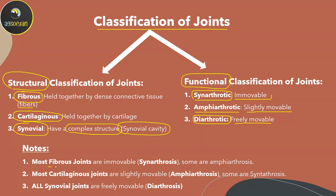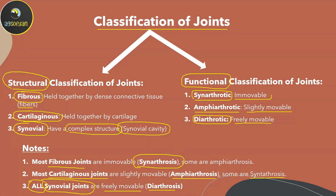Most fibrous joints are synarthrosis — immovable joints. Most cartilaginous joints are amphiarthrosis, giving slight movement, though some are synarthrosis. The synovial joint gives diarthrosis — freely movable joints. Remember: all synovial joints are diarthrosis, they are freely movable joints.